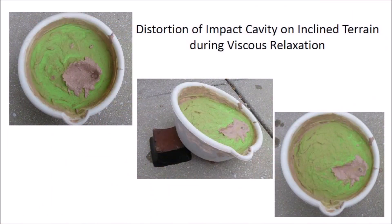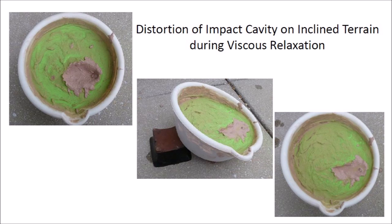I tested this idea by making an impact with an ice projectile on a viscous sand and clay target. I then inclined the experimental container during viscous relaxation. As expected, all the material shifted downward, but it flowed into the cavity faster and created the distorted structure. This is probably what happened on the hills of the Savannah River, but on a much larger scale.